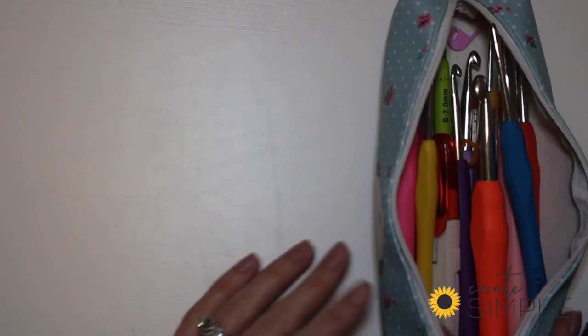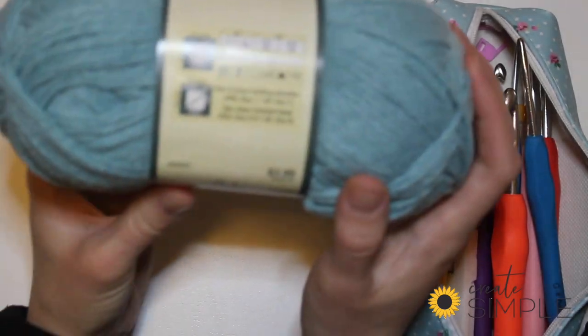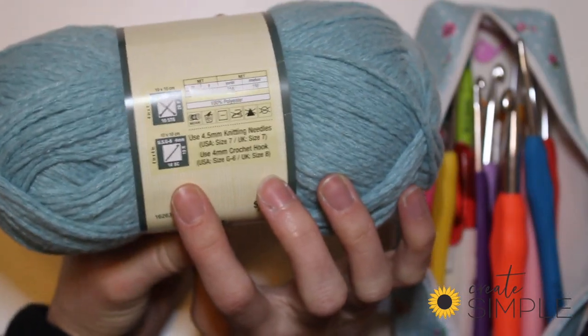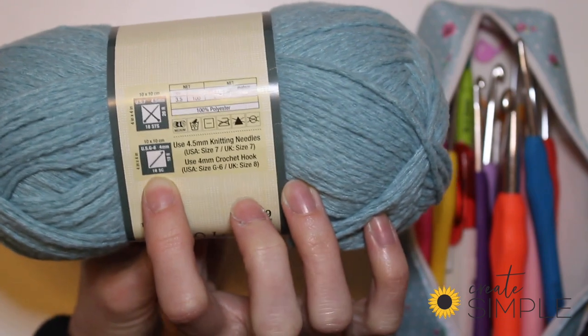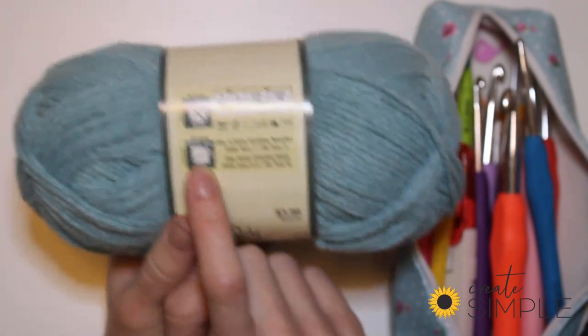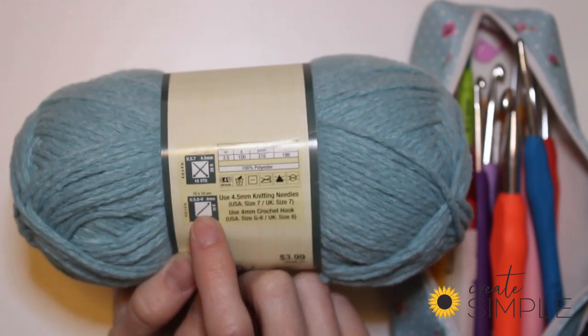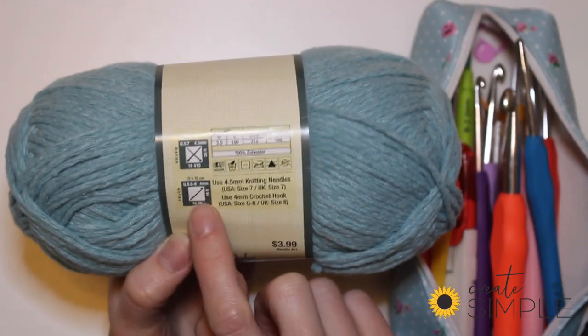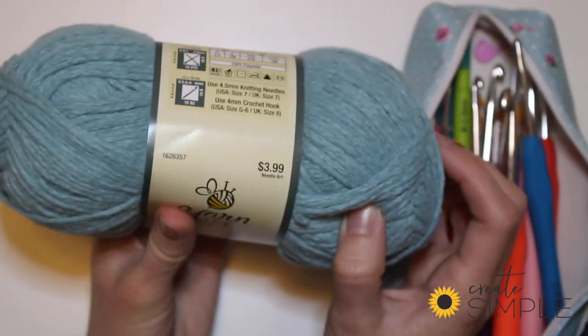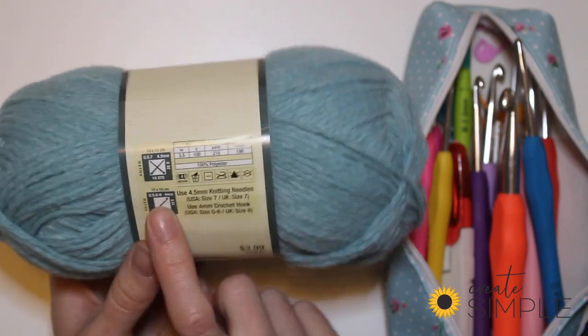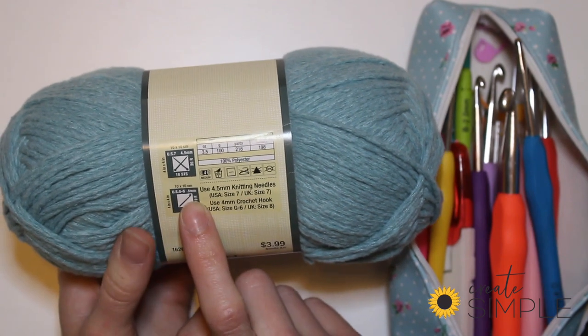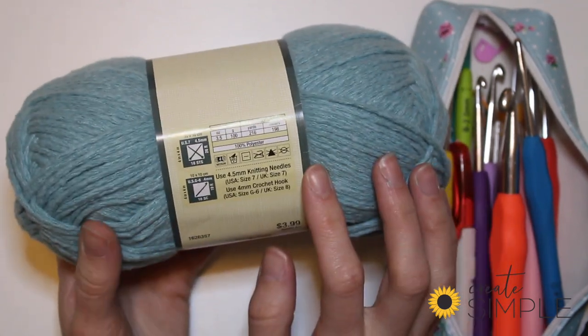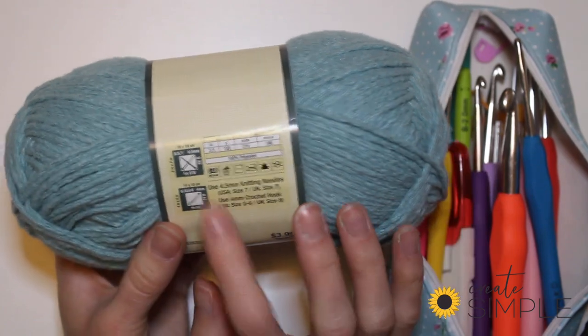After you have your hooks, obviously you'll need some yarn. This yarn in particular, on the back of each yarn when you buy it, there's a picture of knitting needles and a crochet hook. Somewhere around that little instruction or on the back, it'll tell you what size crochet hook goes with this size yarn. In this case it's a 4 millimeter crochet hook. That's how to know what size hook goes with the yarn. You can choose a smaller size if you want a tighter design or a bigger size hook if you want a looser design, but usually I just go with whatever is recommended.